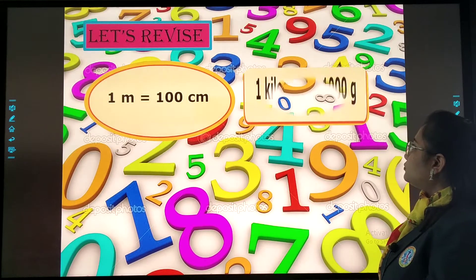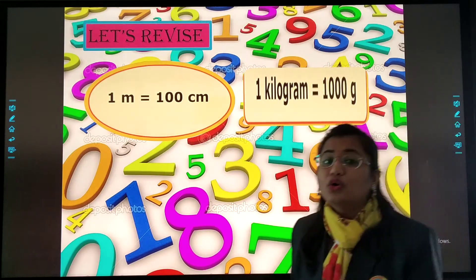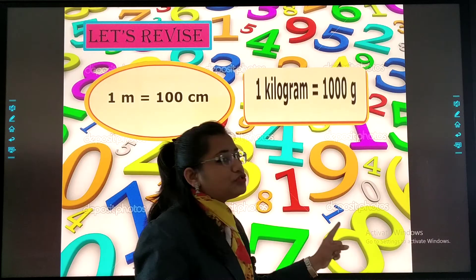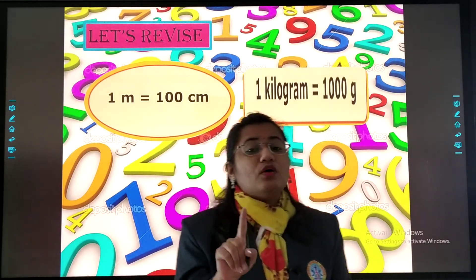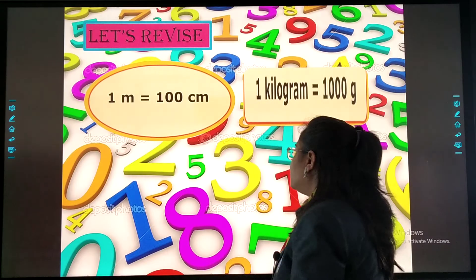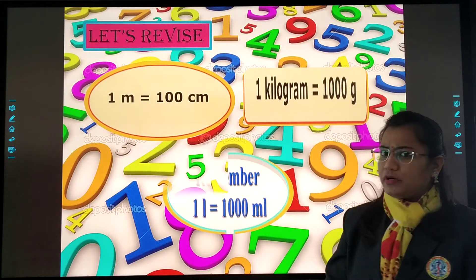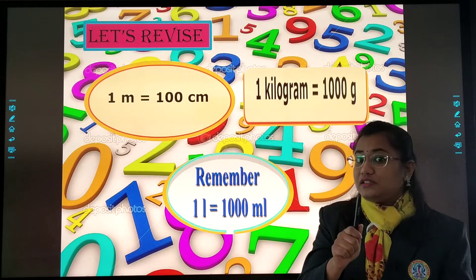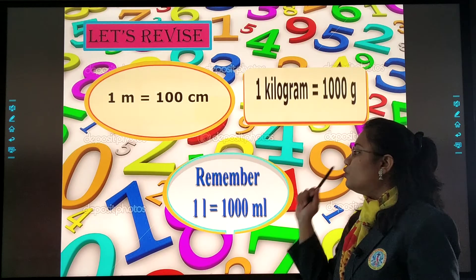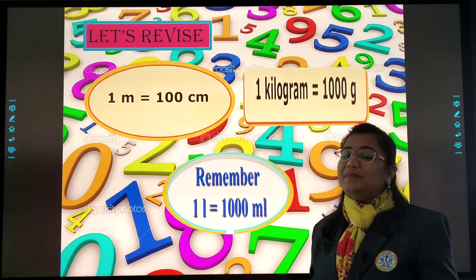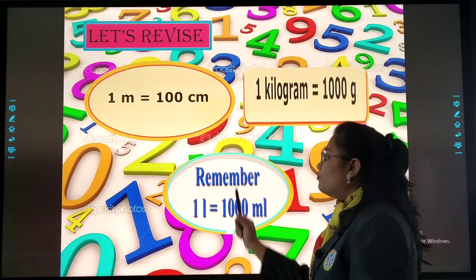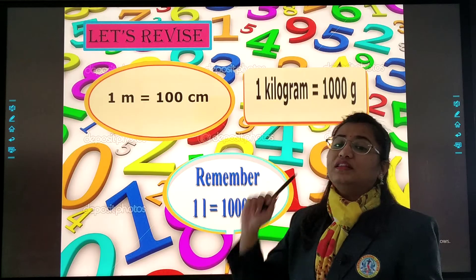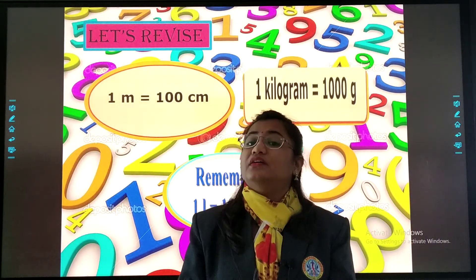Then 1 kilogram is equal to 1000 grams. Last but not the least — remember, 1 liter is equal to 1000 milliliters.